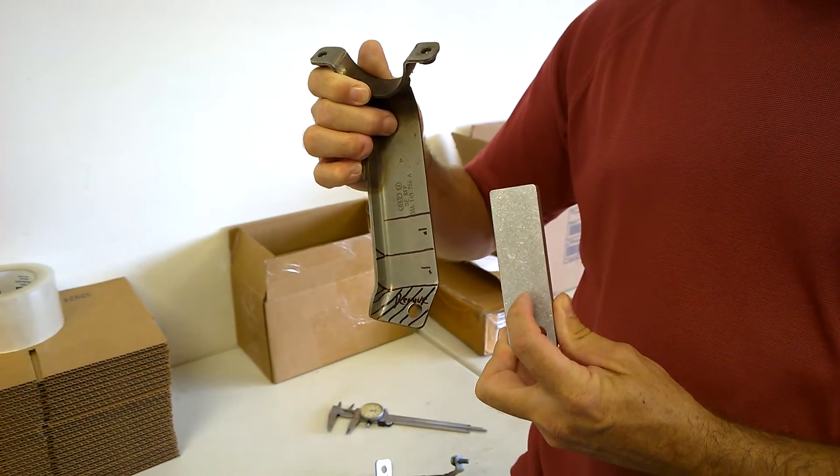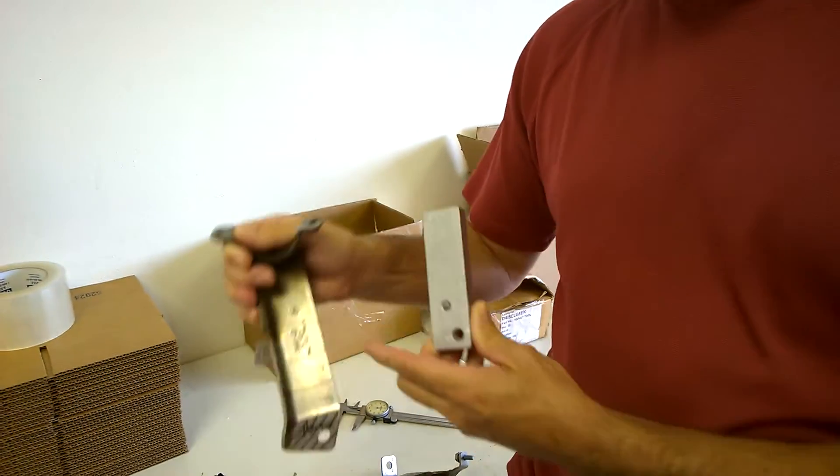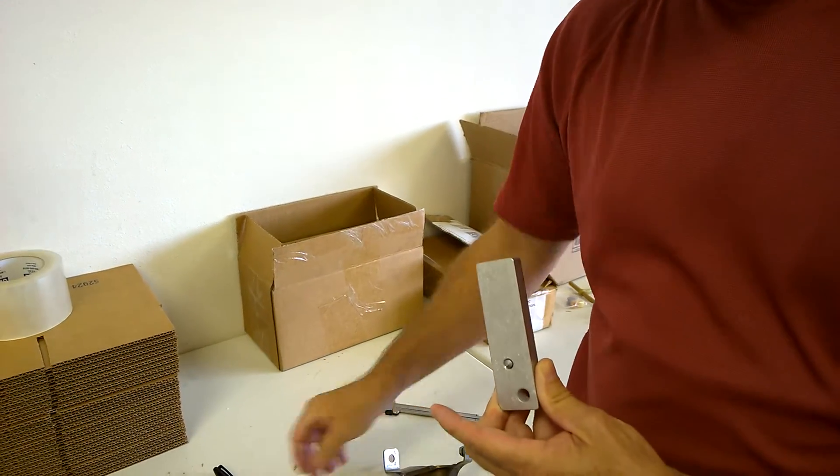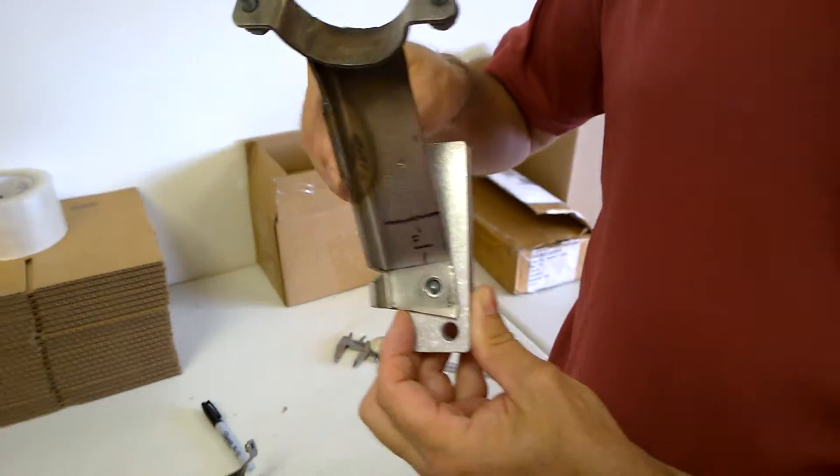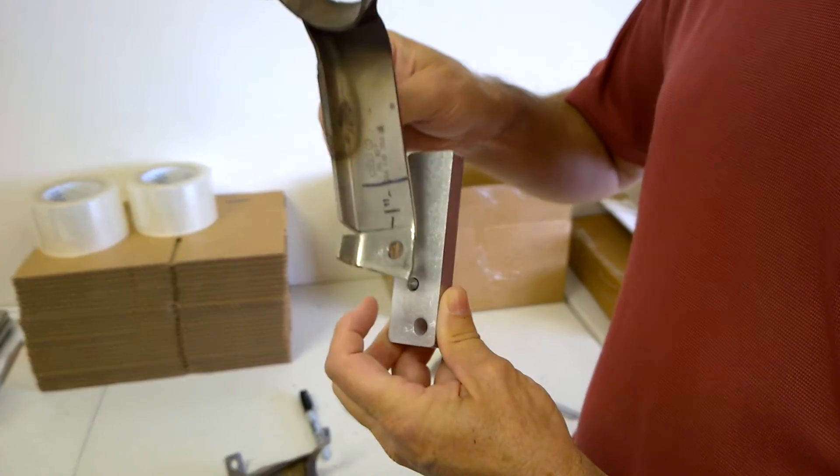It's going to bolt a little higher up, it's going to bolt right here. So this is an unmodified bracket. This is a fully modified bracket and it's going to bolt right here. You can see where the bolt hole is for it.